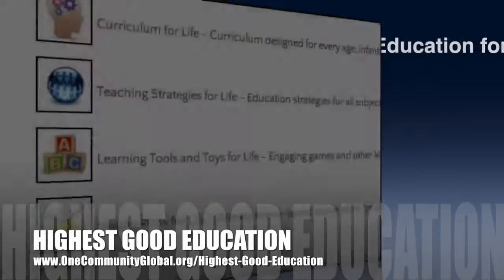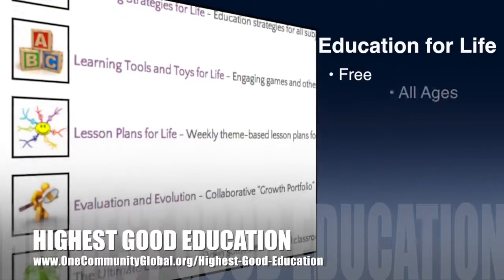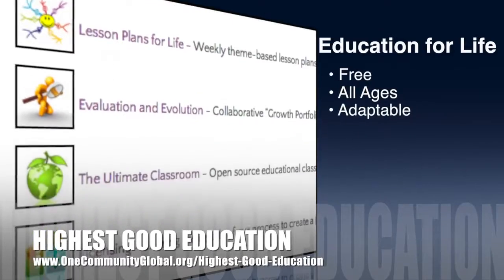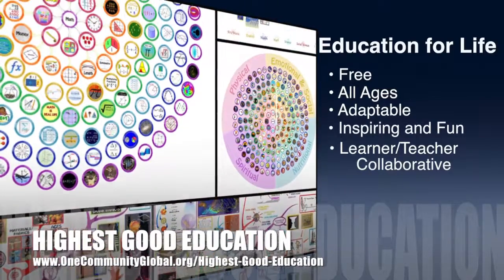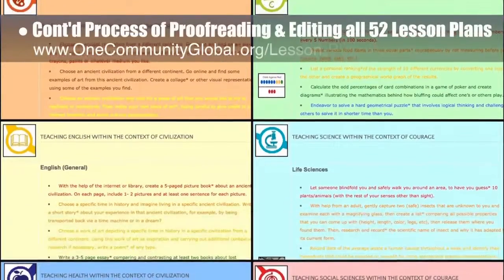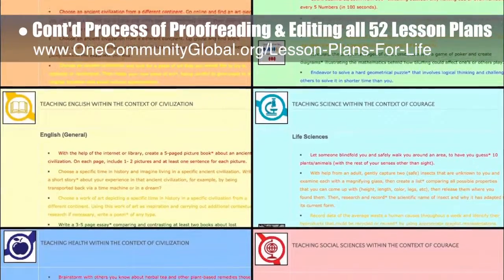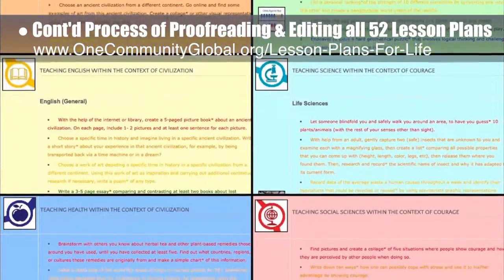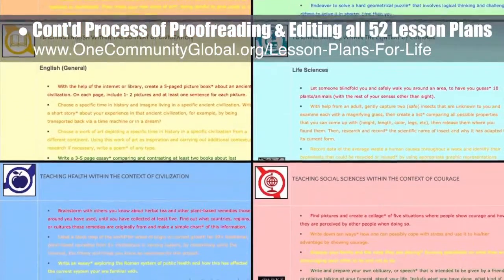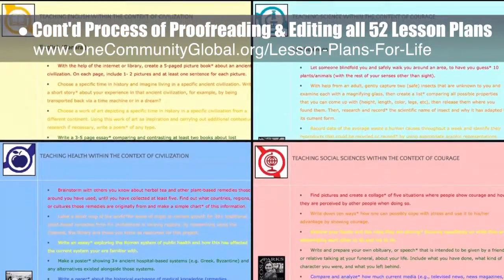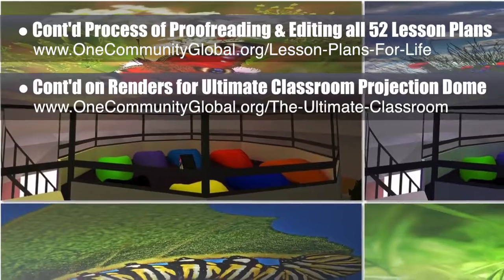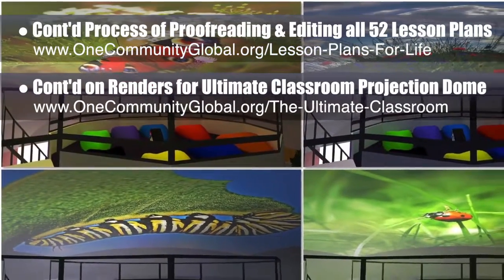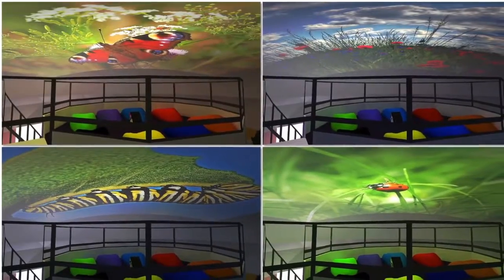One Community's approach to highest good education is open source and free shared, designed for all age groups, adaptable to any schooling environment, inspiring and fun for all participants — a learner-teacher collaborative that includes U.S. Common Core standards. This week the core team continued the final proofreading and editing of all 52 lesson plans, completing the Civilization and Courage lesson plans — bringing us to 24 of 52 finished, approximately 46% complete. We also continued working on renders for the Ultimate Classroom Projection Dome, using the Projecture option of the Lights tool in Twilight Render to generate renders with different projected images.